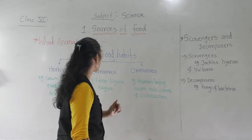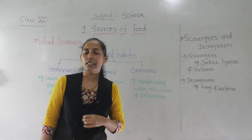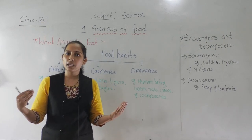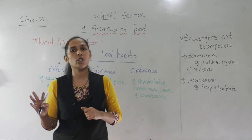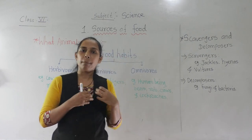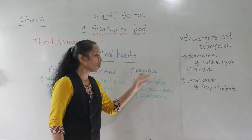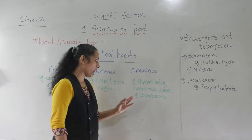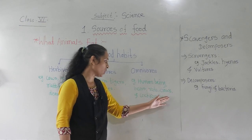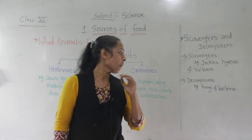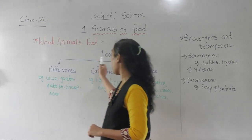The next category is omnivores. Omnivores are animals that eat both plant products and the flesh of other animals — sometimes eating plant products, sometimes eating flesh. This combination is what defines omnivores. The most well-known example is all human beings. Other examples include bears, rats, crows, and cockroaches — all are examples of omnivore animals.